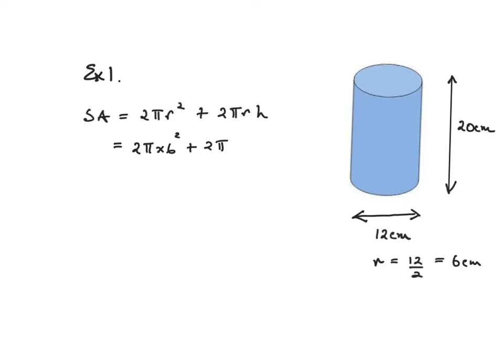And this is a calculator calculation but we can maybe simplify things a little bit. So 6² is 36, 36 times 2 is 72, that's 72π, plus 2 times 6 is 12 and 12 times 20 is 240, so it's 240π.